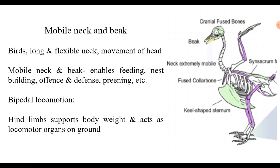Birds show bipedal locomotion. As the anterior part of the body becomes concerned with flight, the posterior part is modified for movement on land. For locomotion on the ground and to support the entire body weight, the hind limbs occupy a somewhat anterior position on the trunk and become stouter, especially in flightless running birds.